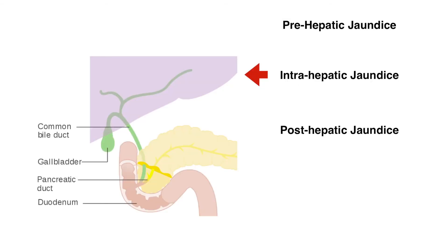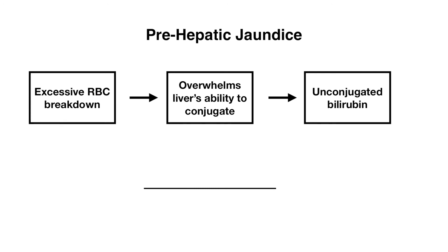Let's talk about jaundice, which is when you have an elevated bilirubin in the blood. I like to break this down into three different categories: prehepatic jaundice, intrahepatic jaundice, and posthepatic jaundice. Let's start with prehepatic jaundice — this is what happens when you have excessive red blood cell breakdown, which leads to an increase in heme concentration and subsequently an increase in bilirubin. What happens here is we have an increase in unconjugated bilirubin that overwhelms the liver's ability to conjugate, so you get an increase in unconjugated bilirubin.